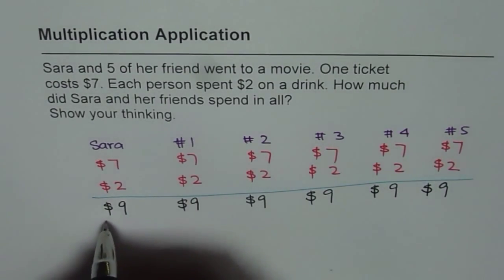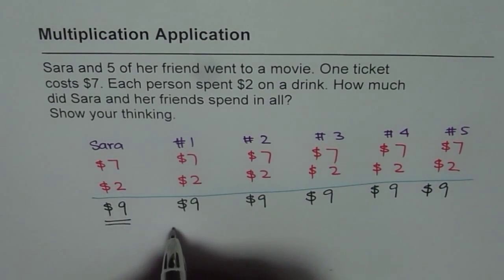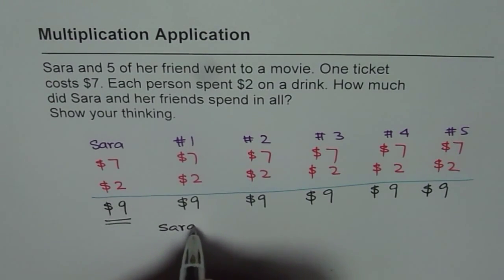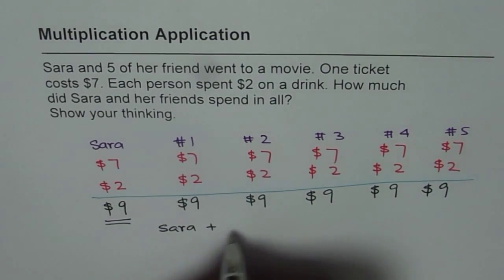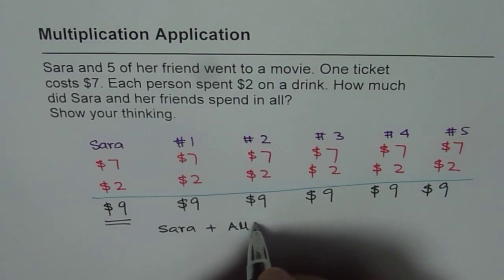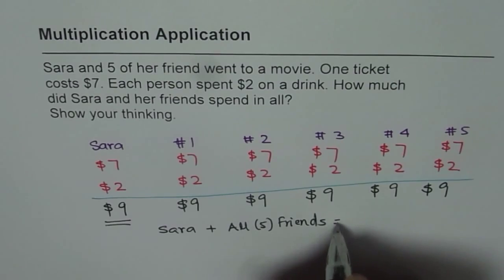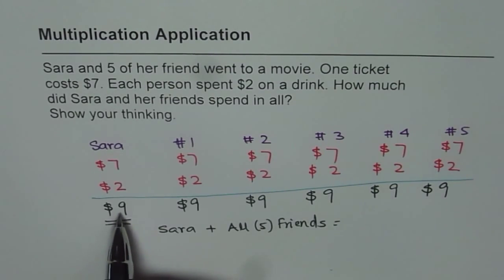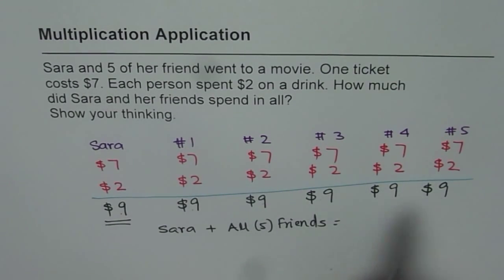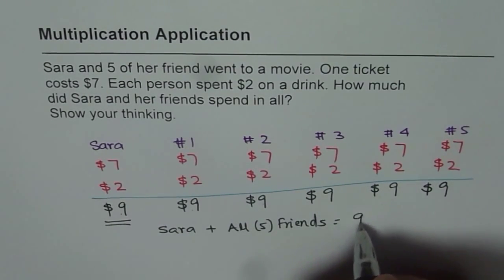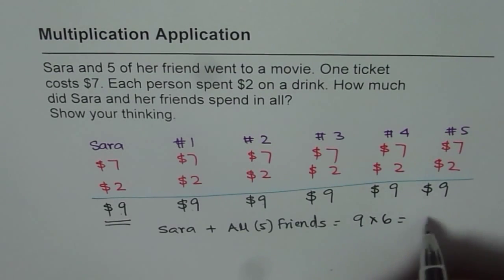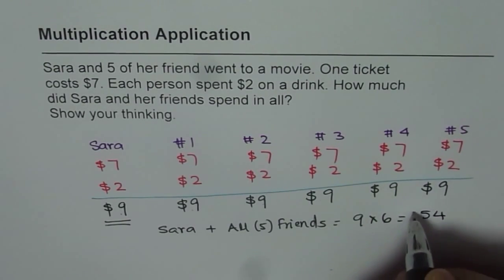So Sarah spends $9.00, and all five friends also spend $9.00 each. Counting them: 1, 2, 3, 4, 5, 6 in all. So 9 times 6, which is $54.00. That is how you can find your answer.